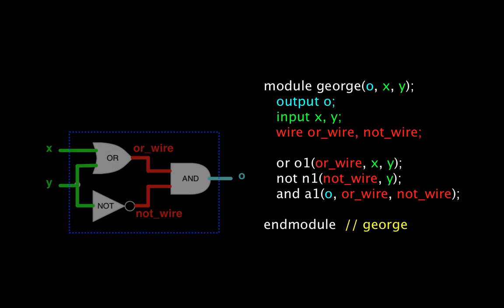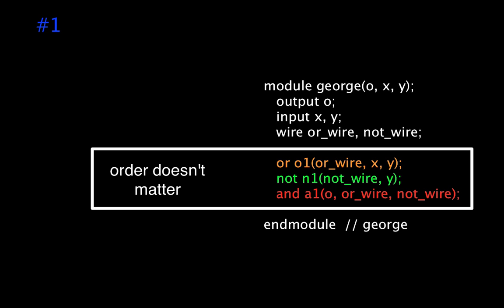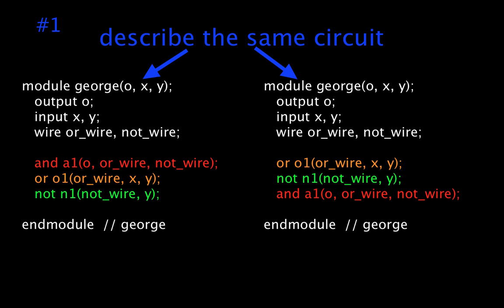Let me further clarify two common misconceptions. First, the order that we instantiate modules doesn't matter. Our module instantiations just describe how things are connected, so we can change their order in the file without changing the topology.